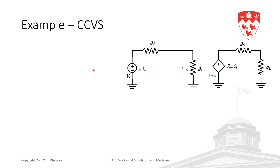Here we have a circuit with a current controlled voltage source, and the value of this voltage source is the transresistance rm multiplied by ii, which is the current in resistor Gi. In order to have this current ii as a controlling variable, we need it as an unknown in our MNA equations, and one way to ensure that is to add a short circuit in series with Gi. The current in the short circuit is then one of our variables in the MNA equations.